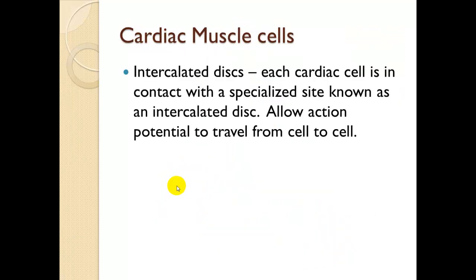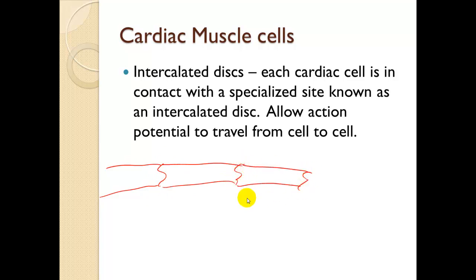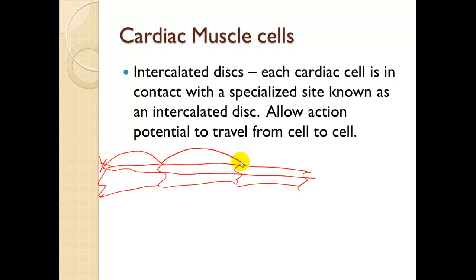Cardiac muscle cells have something special called an intercalated disc. Each cardiac cell is in contact with a specialized site known as an intercalated disc, which allows action potentials to travel from cell to cell. This is important because we want entire regions of heart cells to contract at once. The action potential jumps from intercalated disc to intercalated disc — similar to a myelinated nerve — increasing the speed of electrical signaling in the myocardial tissue.